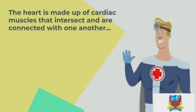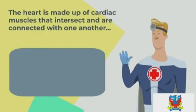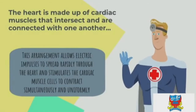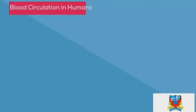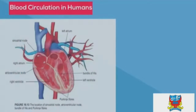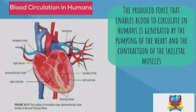Let's move into subtopics 10.3 and 10.4. The heart is made up of cardiac muscles that intersect and are connected with one another, allowing electric impulses to spread rapidly through the heart, stimulating cardiac muscle cells to contract simultaneously and uniformly.